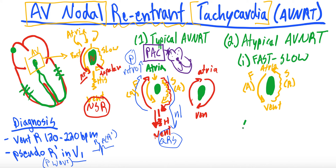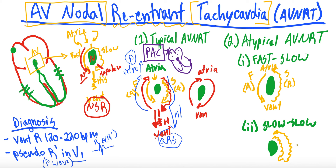The second kind of atypical AVNRT is slow-slow. This is not tremendously different, but you can have two neighboring slow pathways that depolarize. Essentially, one slow pathway is anterograde going down towards the ventricles, and then a second slow pathway next door is retrograde back up towards the atria. That is the circuit you get into with slow-slow.